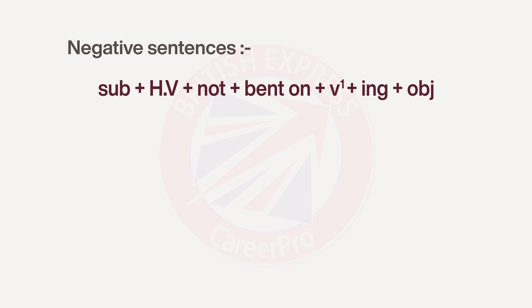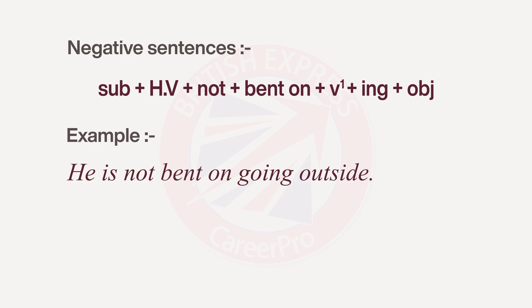The structure is: subject, then helping verb, then 'not,' then 'bent on,' then verb with -ing, then object. For example: 'He is not bent on going outside.'